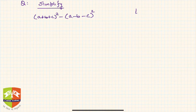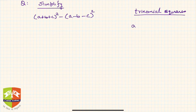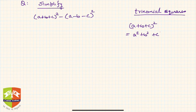We are dealing with trinomial squares. The next problem is: simplify (a + b + c)² − (a − b − c)². We know (a + b + c)² = a² + b² + c² + 2ab + 2bc + 2ca, and we will use it directly here.